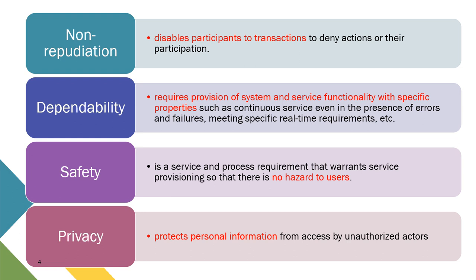The last component is privacy, which protects personal information from access by unauthorized actors. When we use a bank account or fill in forms, we want our privacy to be protected. In IoT systems, privacy is very important, especially when dealing with sensitive information — vendors don't want their information distributed to others. This should be a requirement for any IoT system.